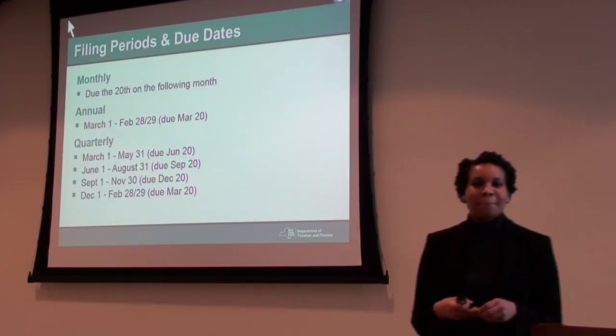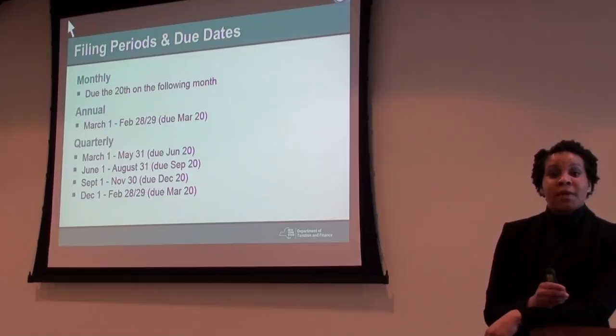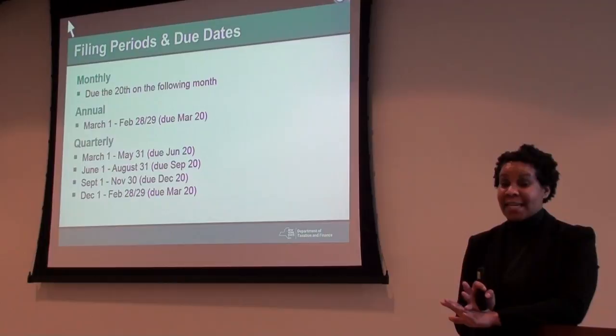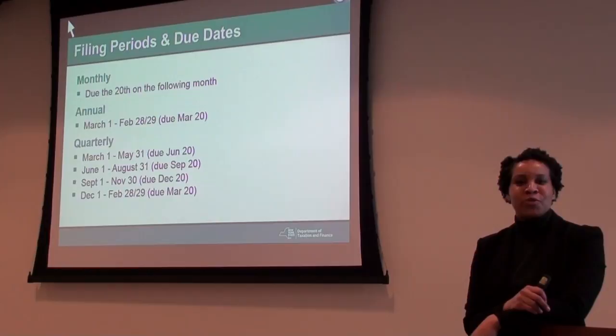A participant asks: they entered gross sales of $2,100 and non-taxable sales of $2,100 — 100% of sales were non-taxable — and it still rendered zero tax due. The instructor confirms that's correct because everything sold was exempt from New York State sales tax. Entering zeros under gross sales would not be right; gross sales must reflect your actual total sales.